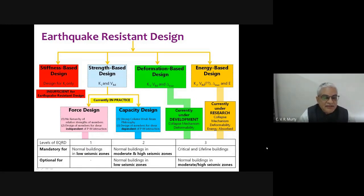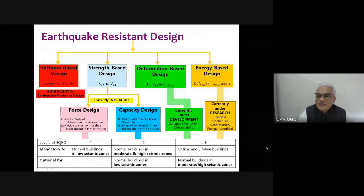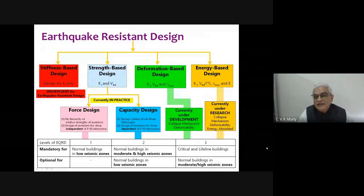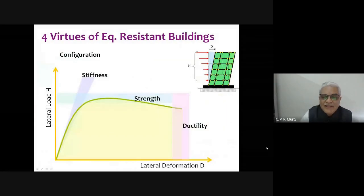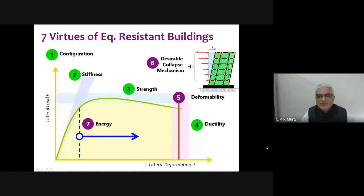Force-based design will be mandatory for normal buildings in low seismic regions. Capacity-based design will be mandatory for normal buildings in moderate and high seismic regions. Deformation-based design and energy-based design will be mandatory for all critical and lifeline buildings, and optional for normal buildings in high seismic regions. We started with four virtues — configuration, stiffness, strength, ductility — and have evolved to seven, adding deformability, desirable collapse mechanism, and energy. I urge everyone to concentrate in at least one of these areas and build a career from it.